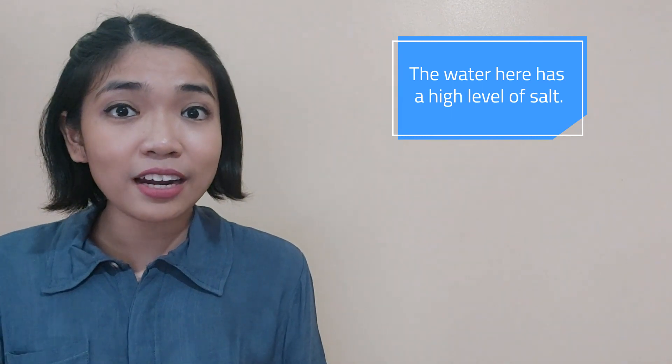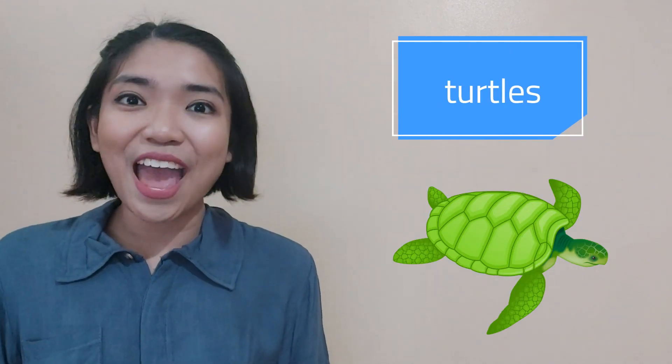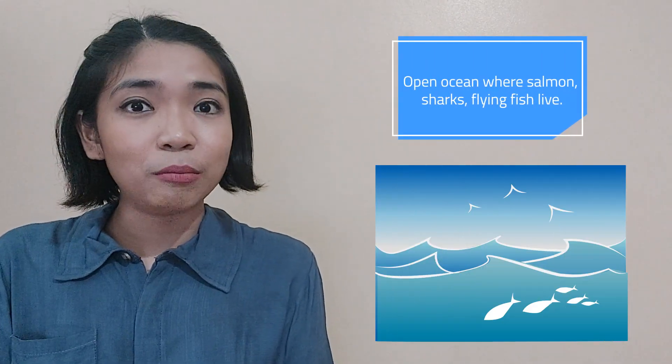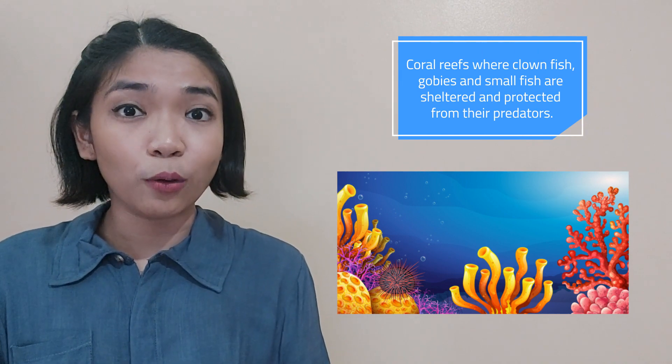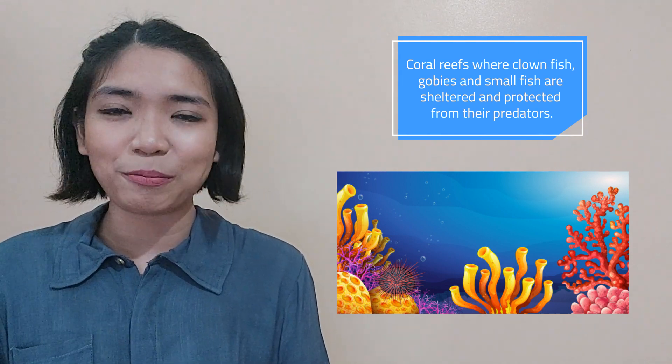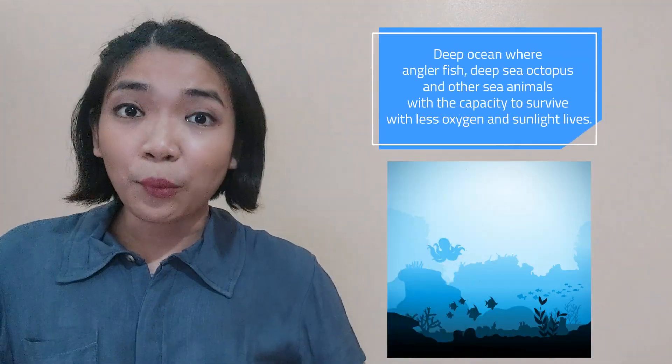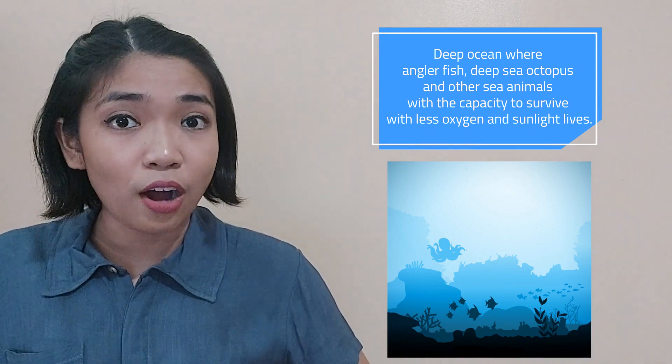Examples of freshwater animals are catfish, freshwater dolphins, and common seals. Marine habitat, or saltwater, refers to seas and oceans where the water has a high level of salt. Small and big aquatic animals can be found here, such as whales, sharks, and turtles. Marine habitats include the open ocean, where salmon, sharks, and flying fish live; coral reefs, where clownfish, gobies, and small fish are sheltered and protected from predators; and the deep ocean, where anglerfish, deep-sea octopus, and other sea animals that can survive with less oxygen and sunlight live.